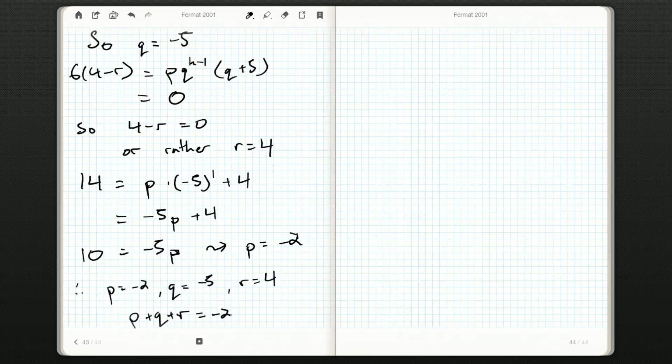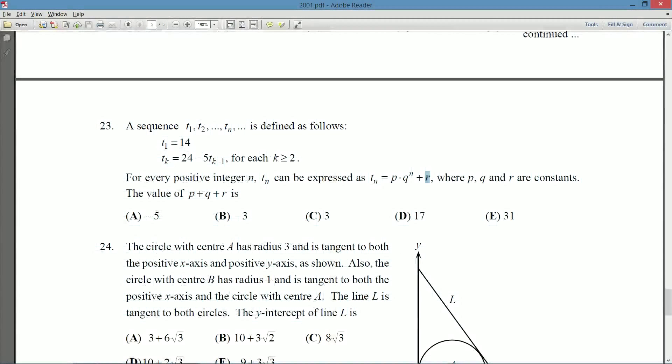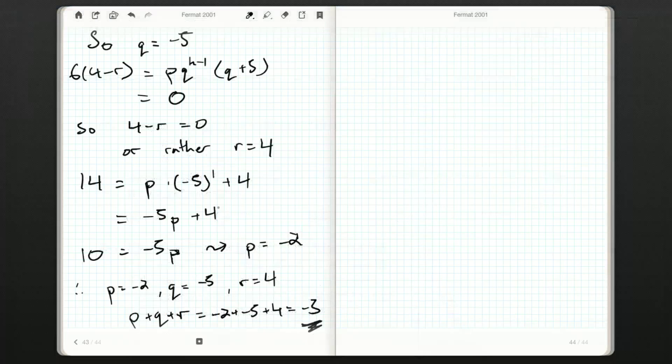So, we want their sum. p plus q plus r, well, that's going to be negative 2 plus negative 5 plus 4. That's negative 7 plus 4. We should get an answer of negative 3. So, negative 3, is that one of our options? There it is. It's b. So, we'll say b negative 3.